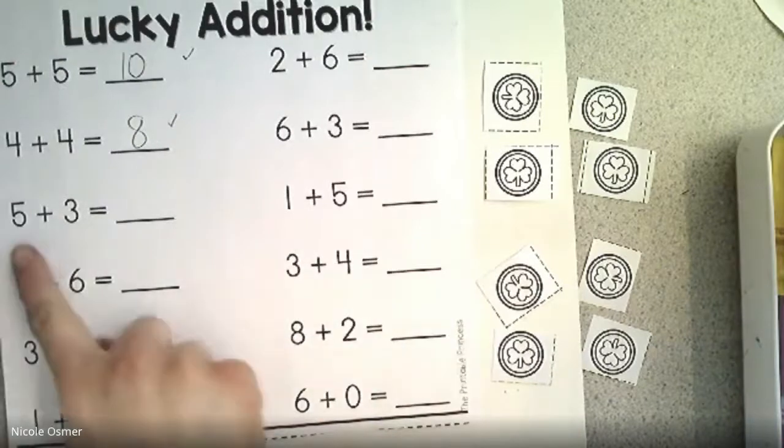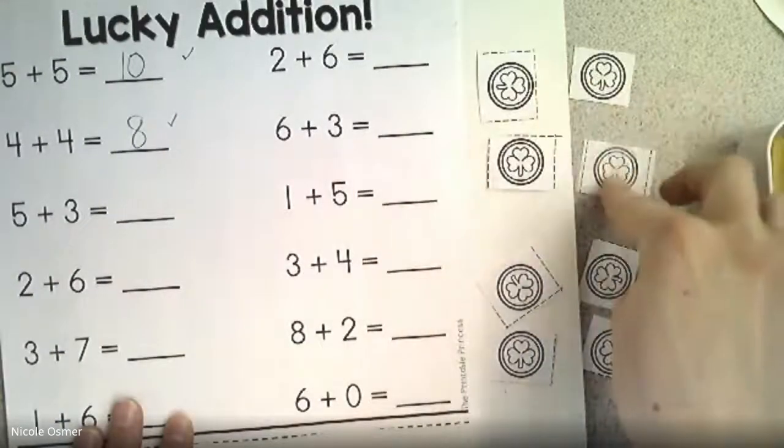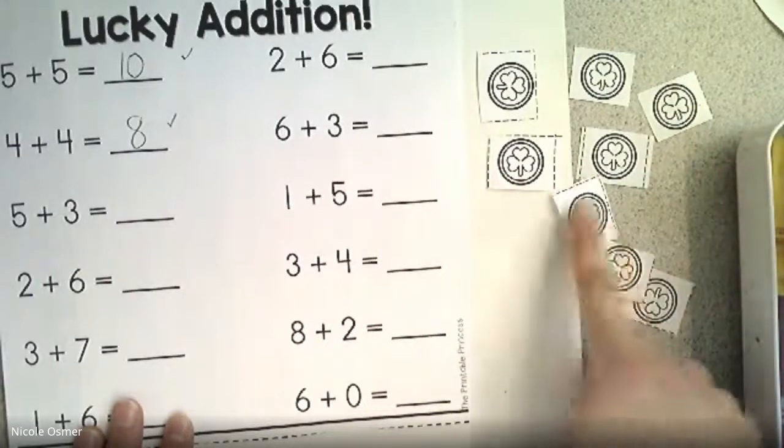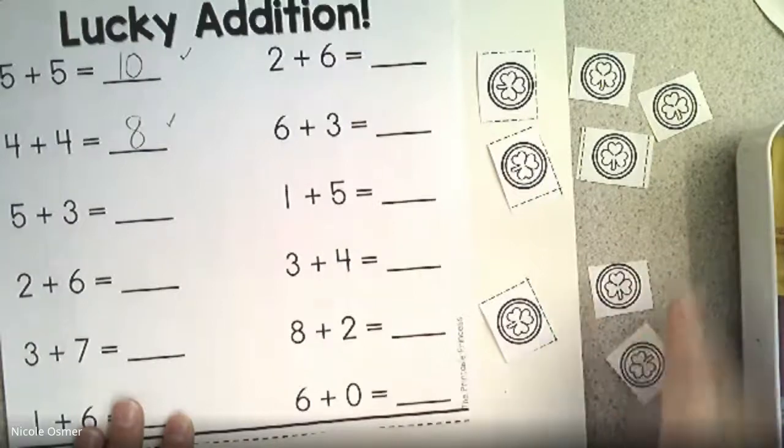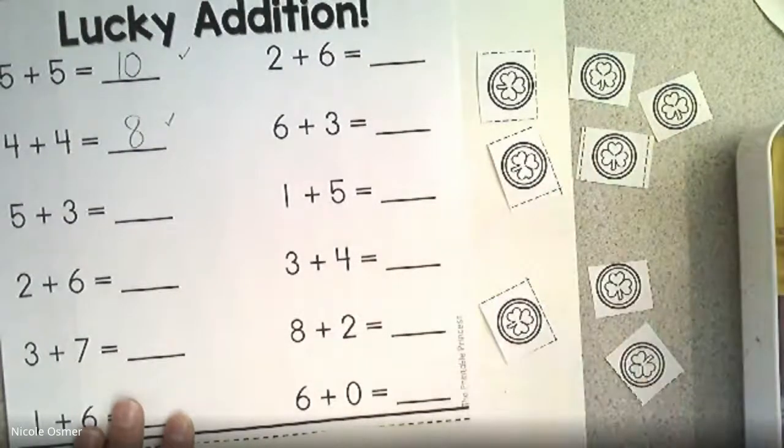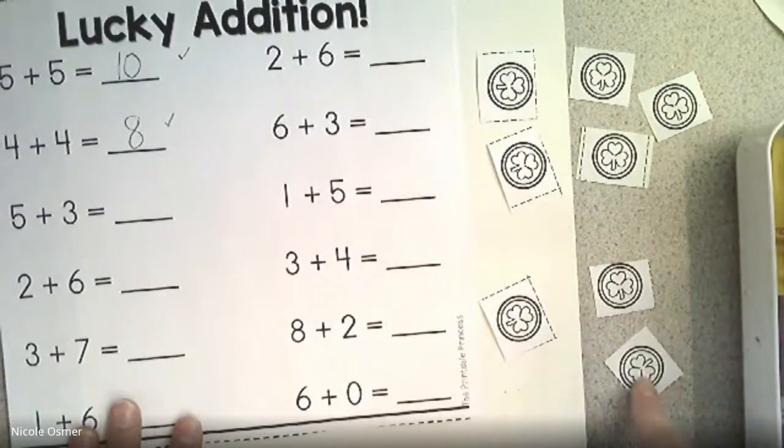This time we're adding five plus three more. So I'm taking five coins here and I'm adding three down below, just like number bonds. Five in the top circle, three in the bottom. How many all together? Five, six, seven, eight again.